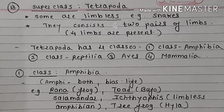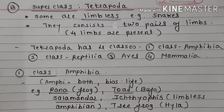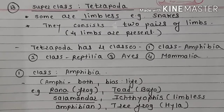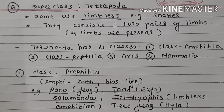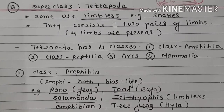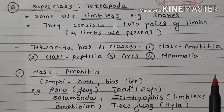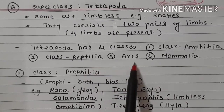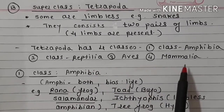Superclass Tetrapoda consists two pairs of limbs, and some are limbless — example, snakes. Tetrapoda has four classes: Class Amphibia, Class Reptilia, Aves, and Mammalia.